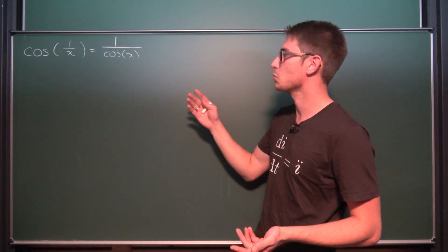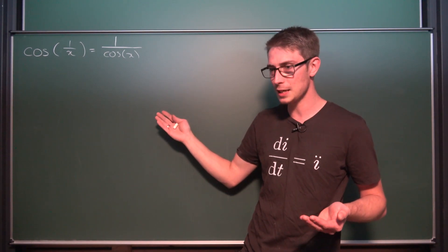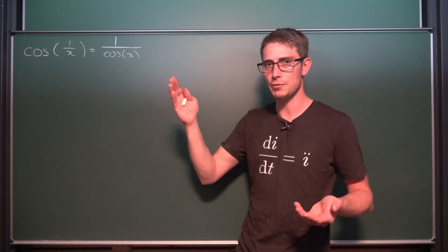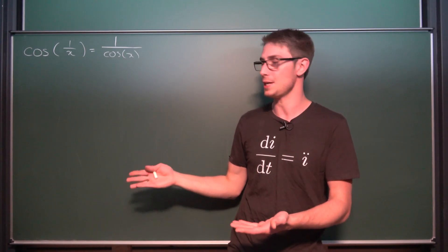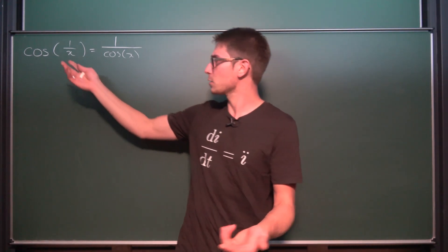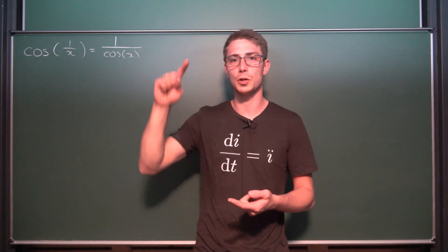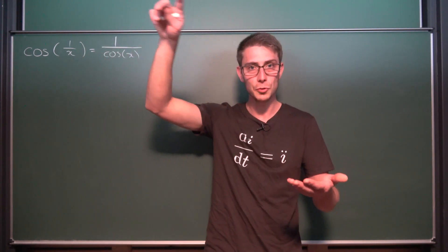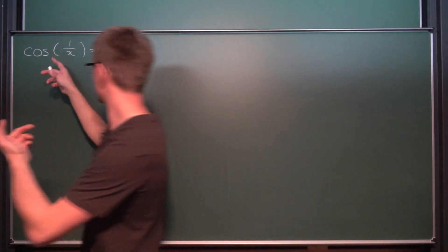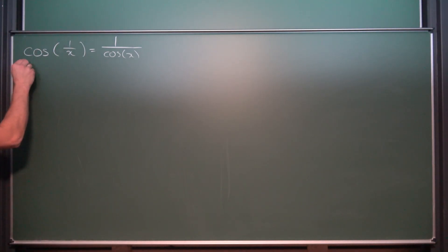The first thing we want to do is we want to see how the cosines are actually bounded. Because this already gives us an understanding of if there do even exist intersection points between those two functions and if there are any, where would they be. So if you take a look at the regular cosine, doesn't matter which argument for now, the cosine is going to be bounded between 1 and negative 1. This is just how the cosine has been defined on the unit circle. Unit circle radius 1. So the cosine of 1 over x is going to be bounded between 1 and negative 1.